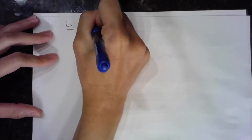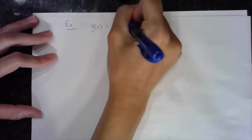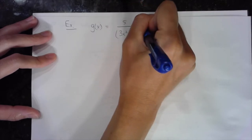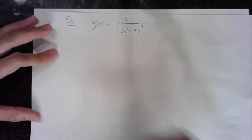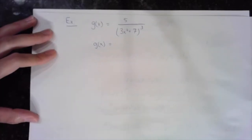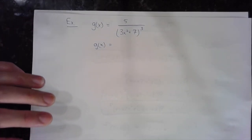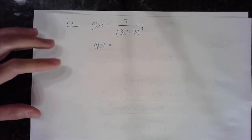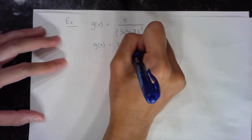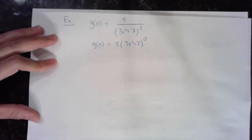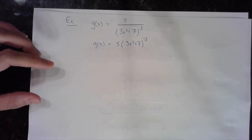Let me show one more application of the chain rule. Let's do g of x equal to 5 over (3x squared plus 7) to the third power. The numerator is just a constant with no expression of x. Instead of using the quotient rule, I'm going to bring that denominator up — (3x squared plus 7) — and when I do that it becomes a negative three exponent, then apply the chain rule.